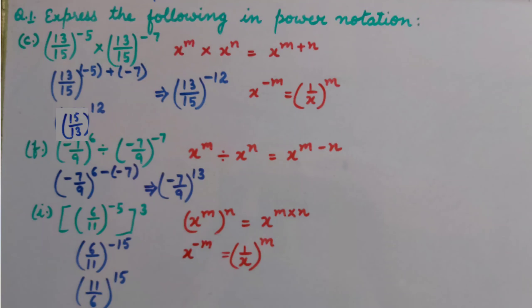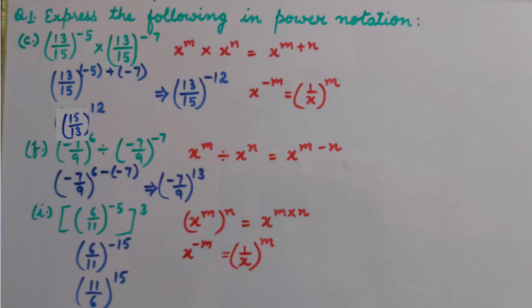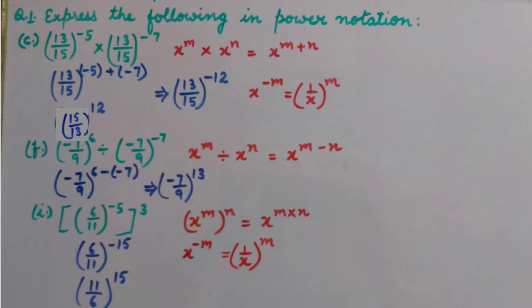Part C: 13 upon 15, whole raised to power minus 5, multiplied by 13 upon 15, whole raised to power minus 7. Here we can see the powers are negative and the bases are the same.